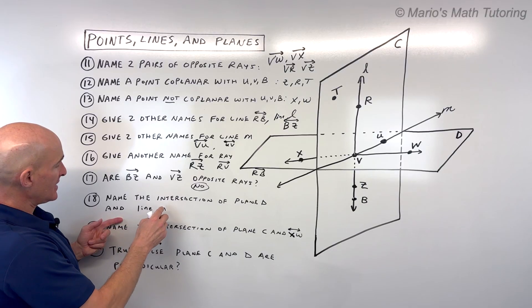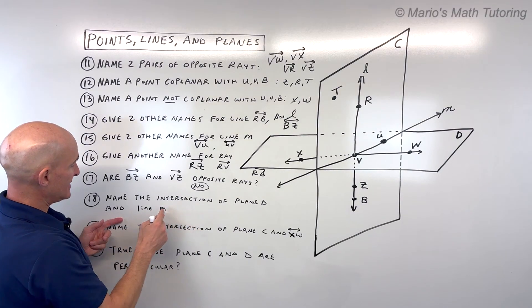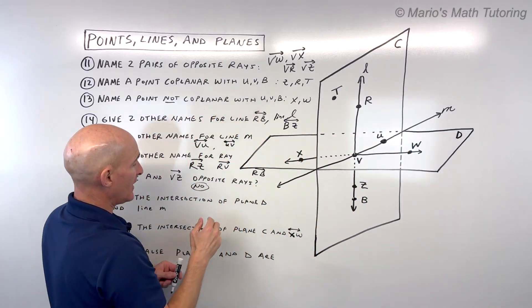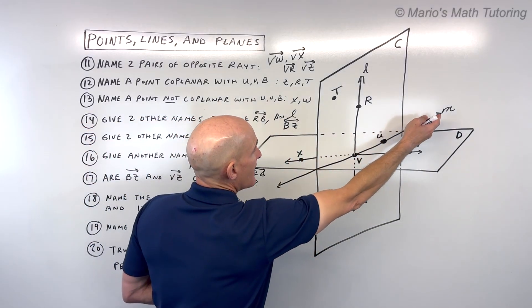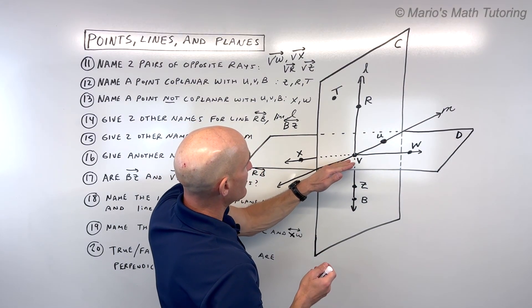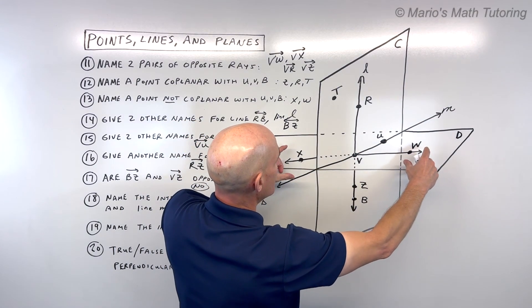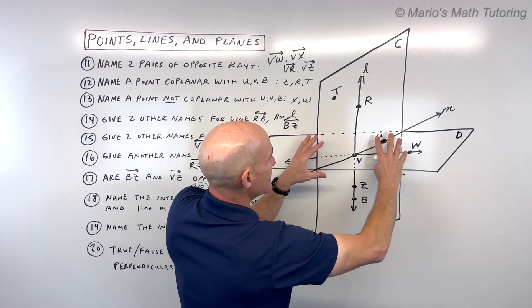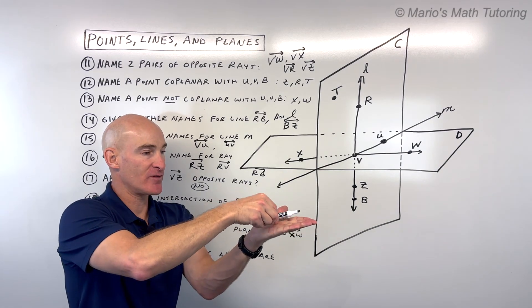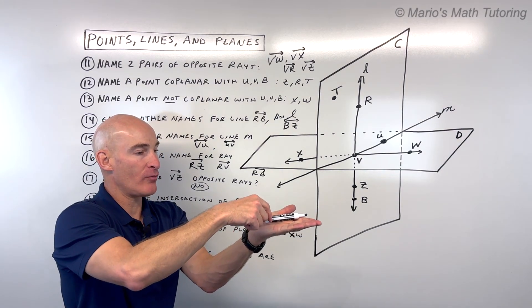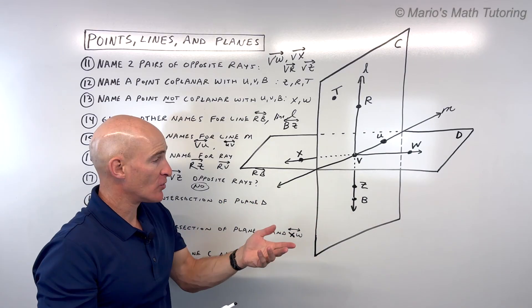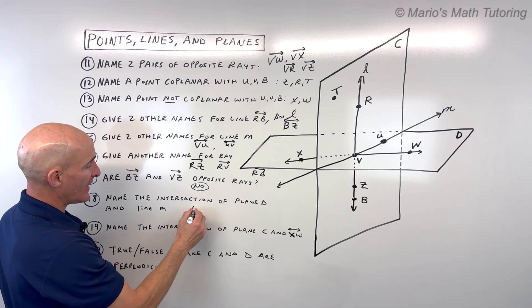For number 18, name the intersection of plane D and line M. Plane D is this horizontal plane. Line M is this line right here. What's interesting is that this line M lies in the plane. Like imagine if my hand is a plane, I put that line right in the plane. All the points on the line are intersecting with the plane. So the intersection is the entire line, just line M.